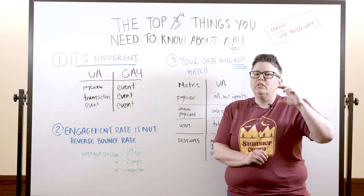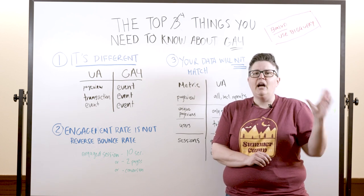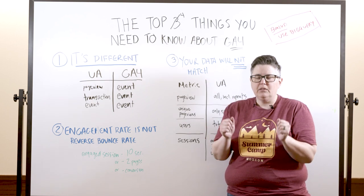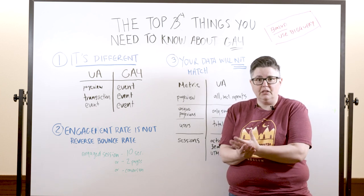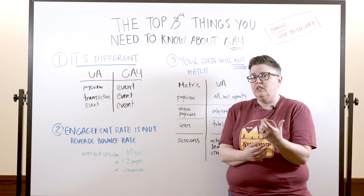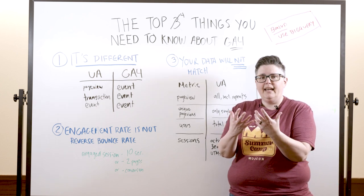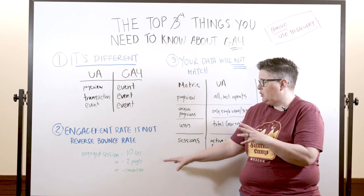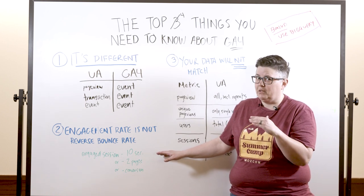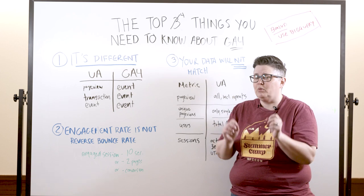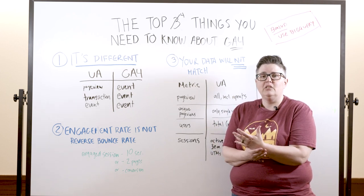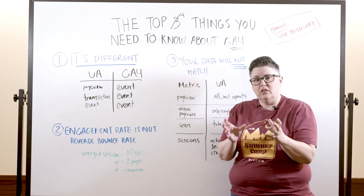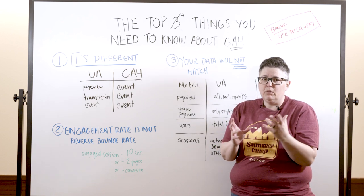Bounce rate in UA was: an event didn't happen. It didn't matter if you spent an hour and a half on the page reading closely — if you didn't trigger an interactive event, you were counted as a bounce. Whereas in GA4, an engaged session is, by default, someone spending 10 seconds with that tab open and active in their browser, or they visited two pages, or they had a conversion. This 10-second rule is pretty short, so you might want to change it. It's under the tagging settings in your data stream — go to Admin, then your data stream, then more tagging settings, then session timeouts.